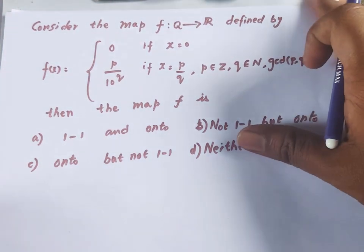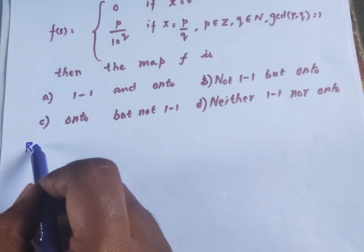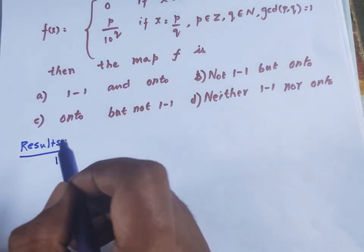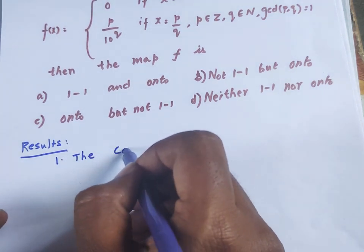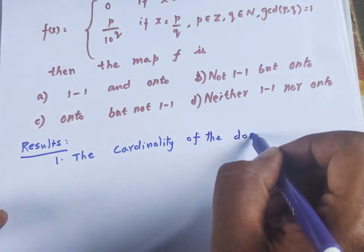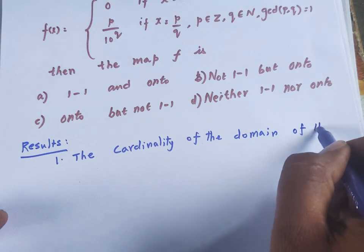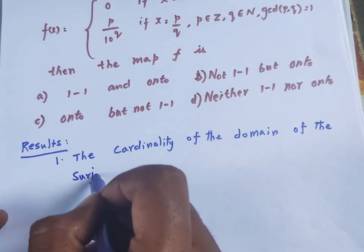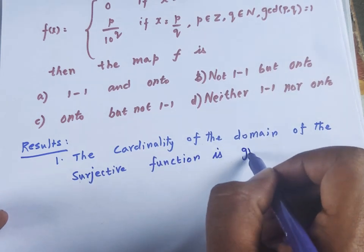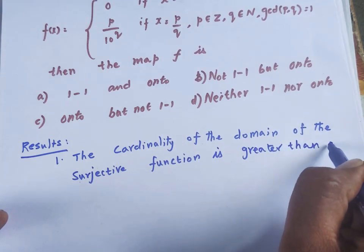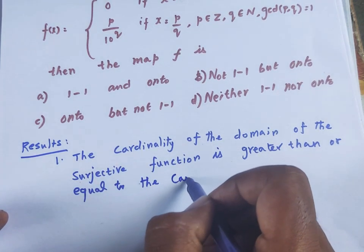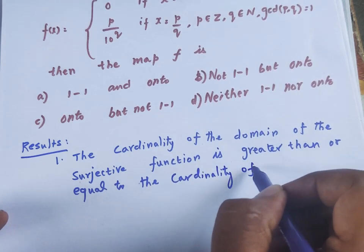First result: the cardinality of the domain of a surjective function is greater than or equal to the cardinality of its co-domain.